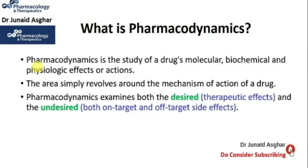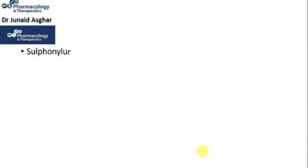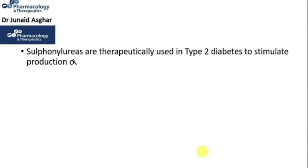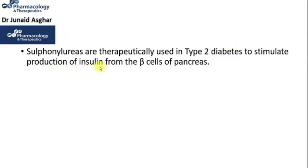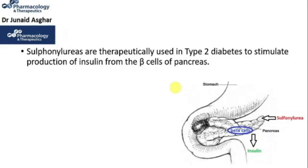Let's explain this concept with some examples. Sulfonylureas are therapeutically used in type 2 diabetes to stimulate production of insulin from the beta cells of the pancreas. Sulfonylureas are widely used oral hypoglycemic drugs for the management of type 2 diabetes. As shown in the pencil sketch, a sulfonylurea stimulates the beta cells of the pancreas, resulting in the secretion of insulin.